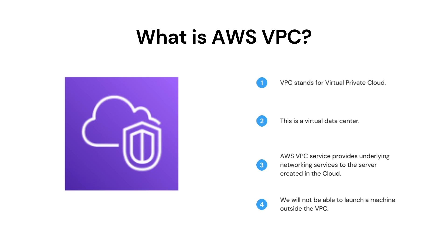VPC stands for Virtual Private Cloud and this provides you with underlying networking services like routing and switching. You can look at it as a virtual data center in the AWS cloud. Amazon VPC gives you full control over your virtual networking environment, including resource placement, connectivity and security. This is a basic service and you will not be able to launch any EC2 machine outside the VPC. This is an isolated space where you can launch your resources with the utmost security and privacy.